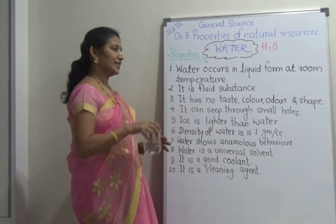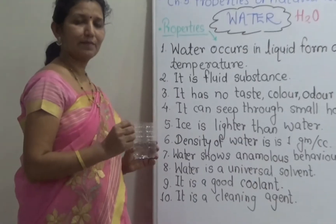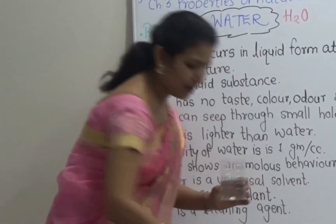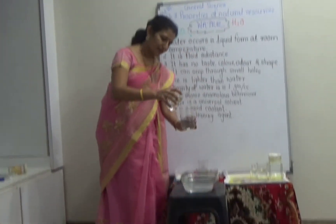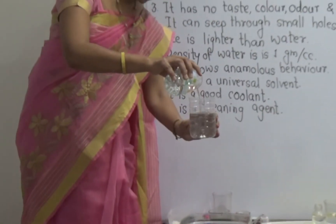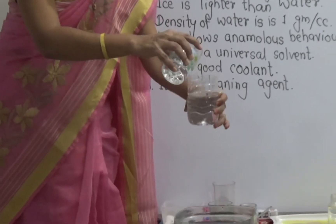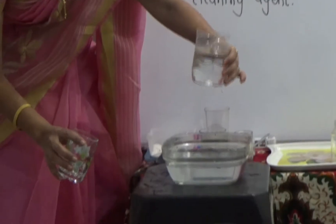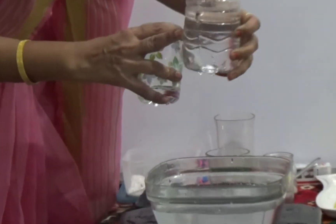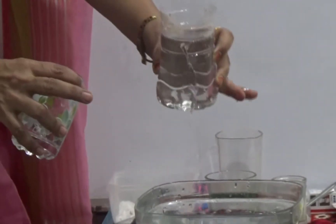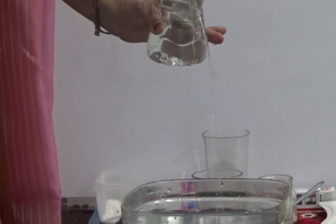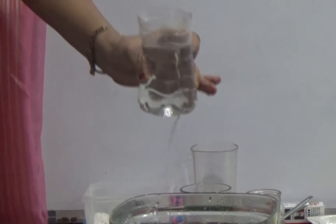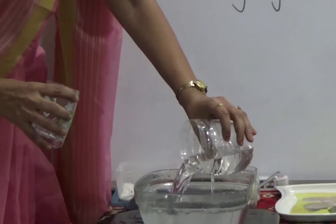Water can seep through small holes, small cracks, and small gaps — we will see this now. This is a glass bottle, and if I pour water in it, see, the water is coming outside from it. That means it seeps from the small holes, gaps, or cracks.